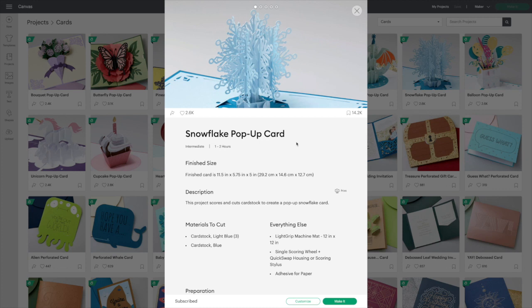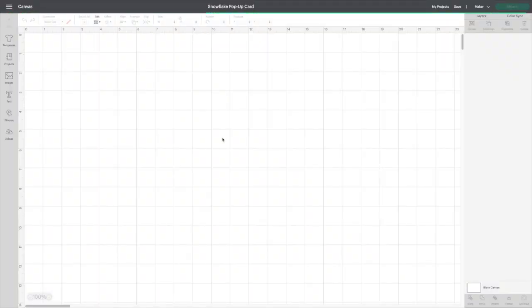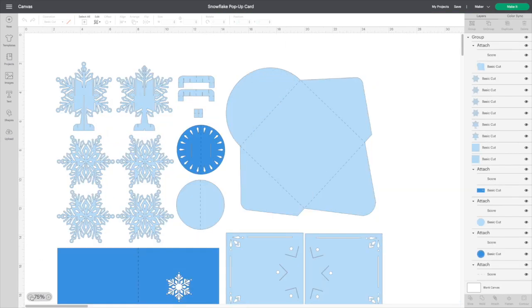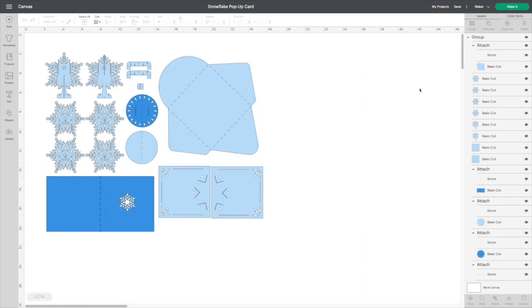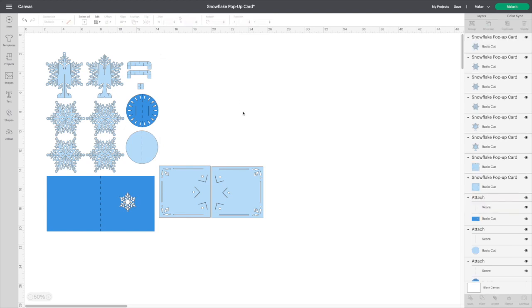If you just go into cards and search snowflake, you'll be able to bring it in. There's the card itself. It's calling for two different colored blues. You could easily do multi colors on this one if you wanted to, but I'm just going to do the colors that Cricut has. When you open it up, you can see all the pieces there. I'm going to ungroup this and I'm not going to do the envelope.